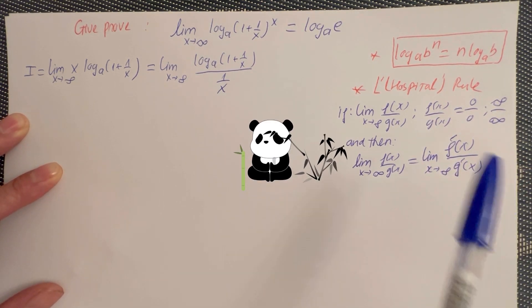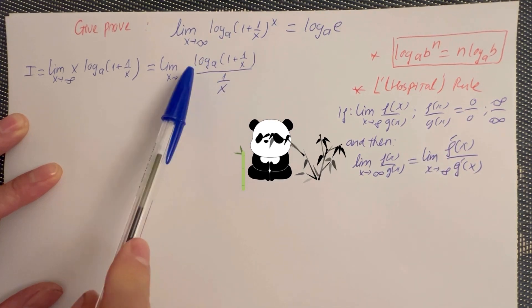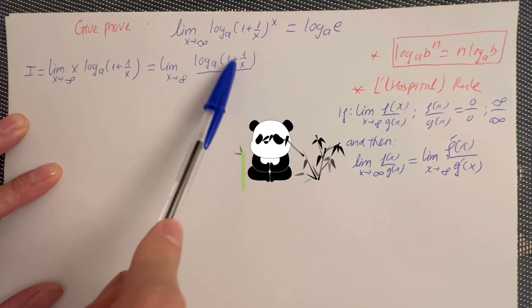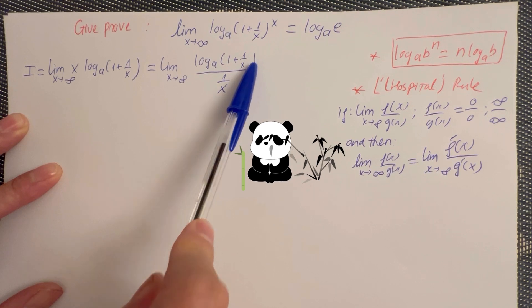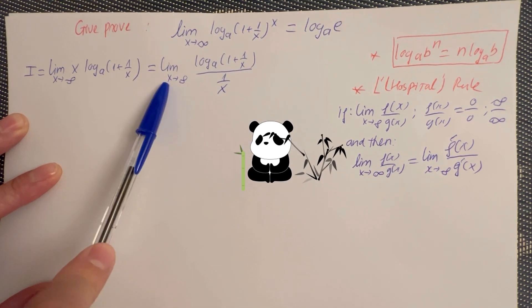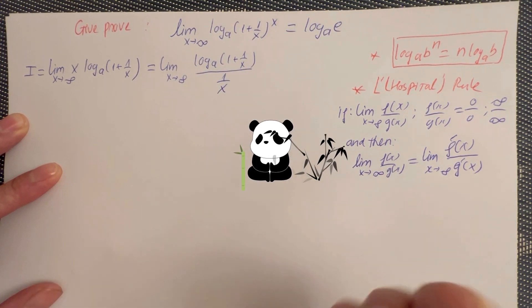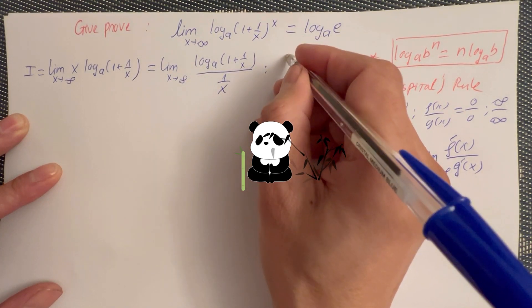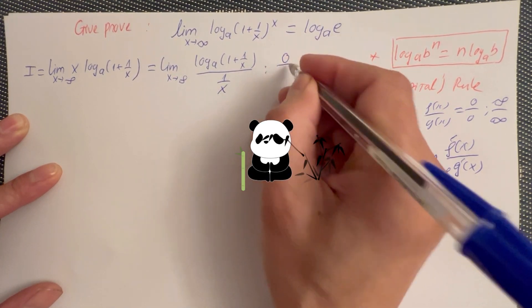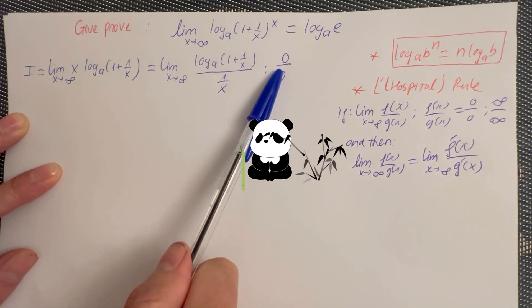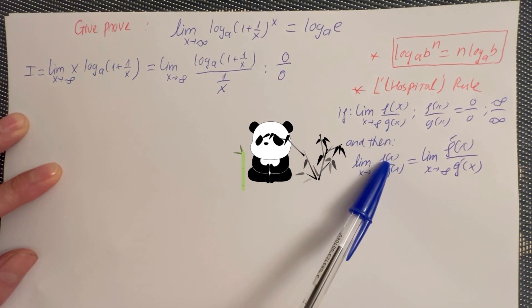Now you can apply it to this one. Look there — you have log A of 1 plus 1 over x, over 1 over x, when x becomes infinity. That form is infinity over infinity, so that form fits this rule and you can use it.